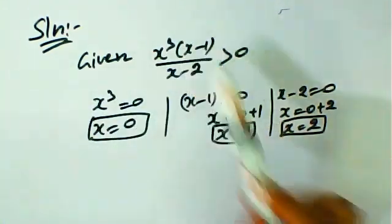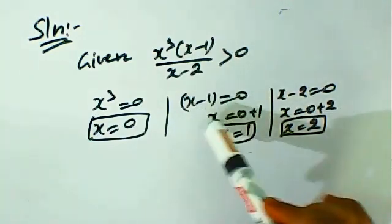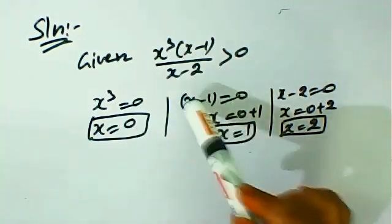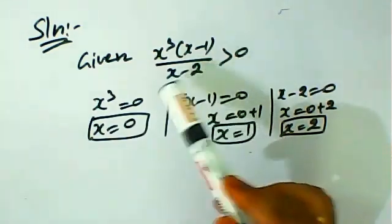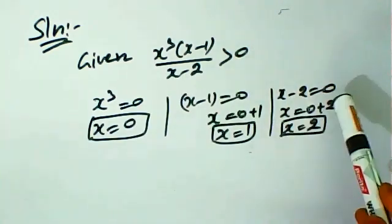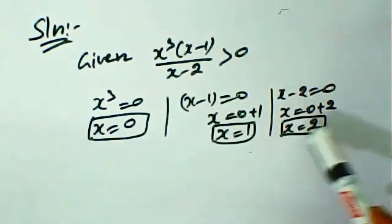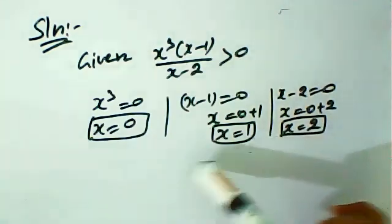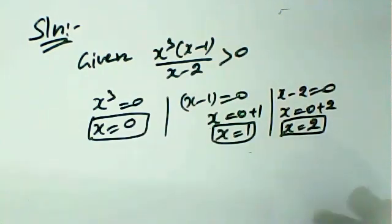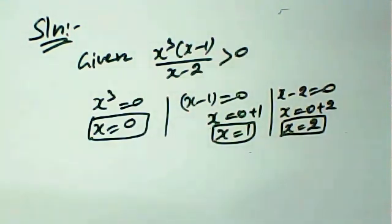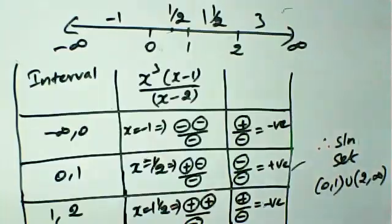If x minus 1 equals 0, then x equals 1. If x minus 2 equals 0, then x equals 2. So the critical values are x = 0, 1, and 2. Now we need to go to the number line.